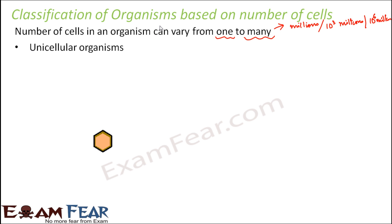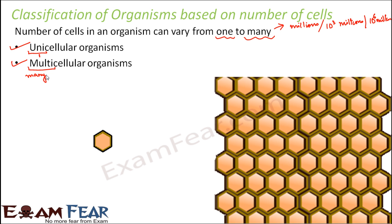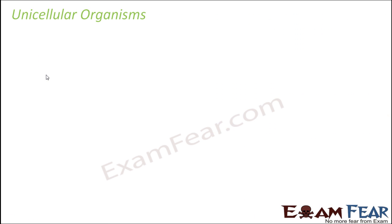Based on the number of cells present in an organism, they can be classified into two types: unicellular organisms and multicellular organisms. Uni means one and multi means many. Organisms with one cell are called unicellular organisms, whereas organisms with multiple cells are called multicellular organisms. Let us quickly see unicellular organisms.